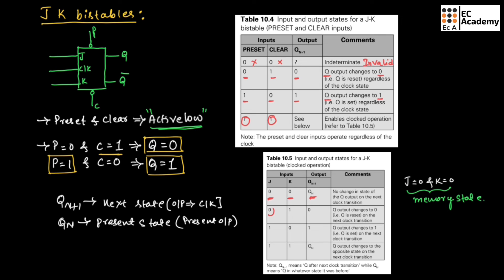When J is 0 and K is 1, output will be 0. When J is 1 and K is 0, output will be 1.